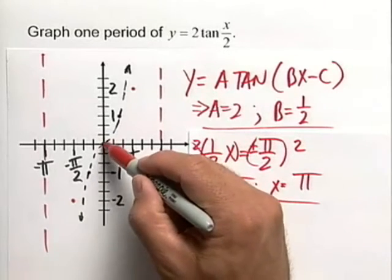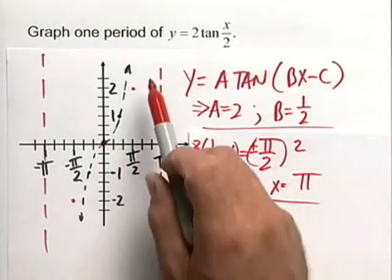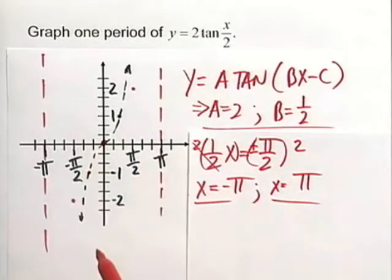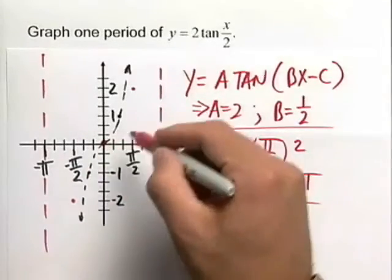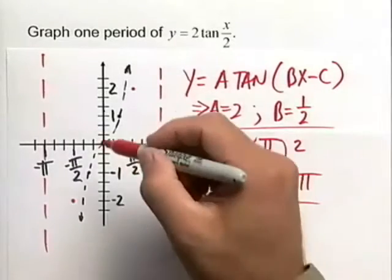So just like before, we have our origin. We're going to have the point pi halves comma 2 and negative pi halves negative 2. And then we know how our tangent graph reacts around our vertical asymptotes.